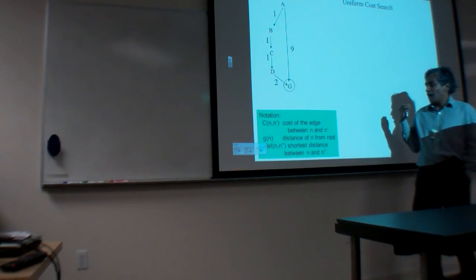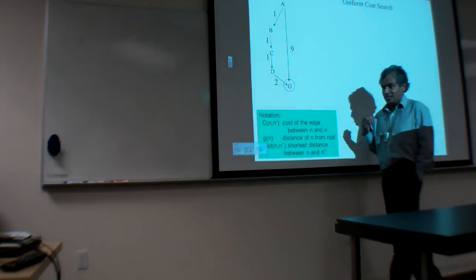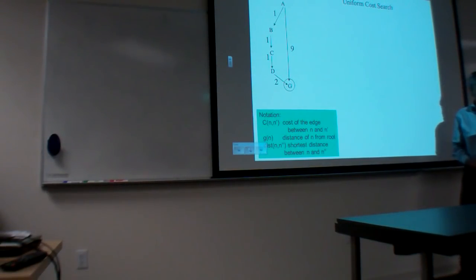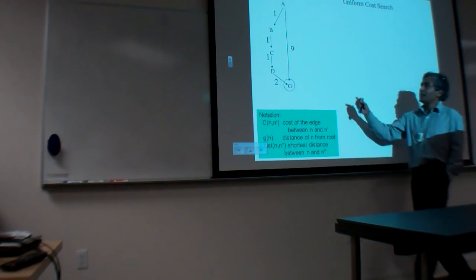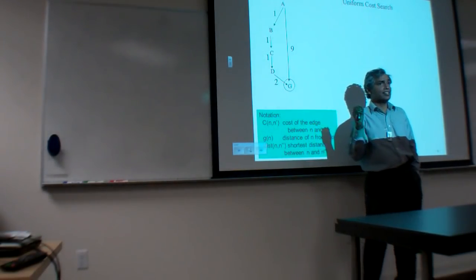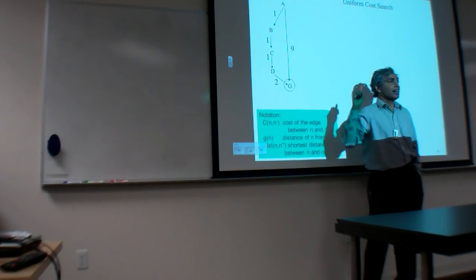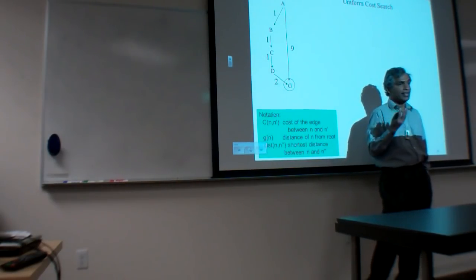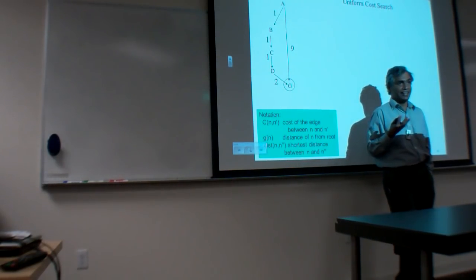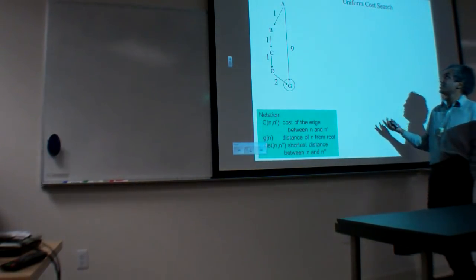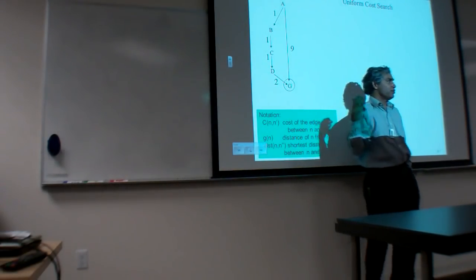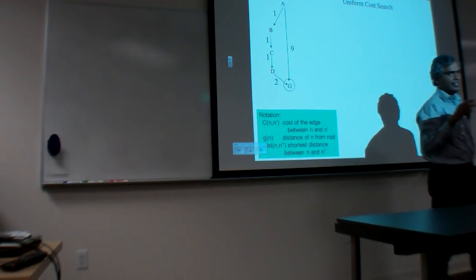One interesting thing that you have to get used to is the silliness of the nomenclature. When you have non-uniform cost on the edges, they call it uniform cost search. I didn't name it that way, but they call it uniform cost search when the edge costs are actually non-uniform. That's a very silly thing.